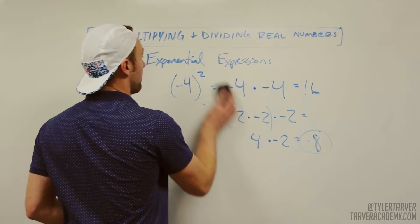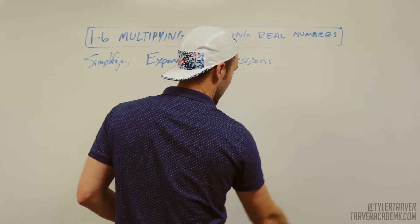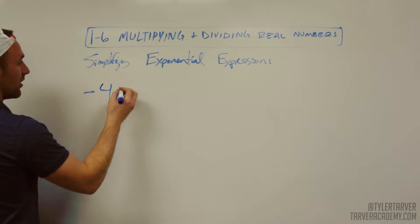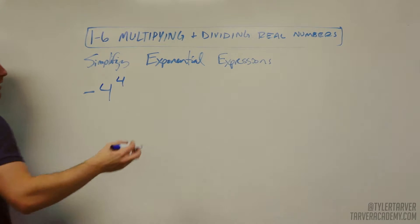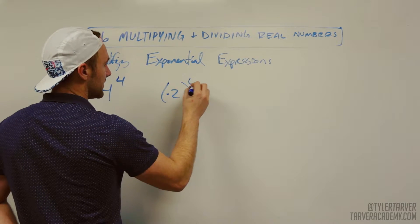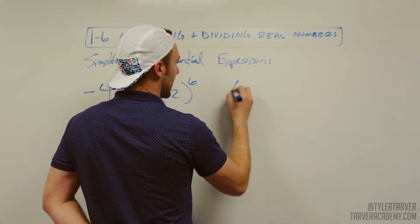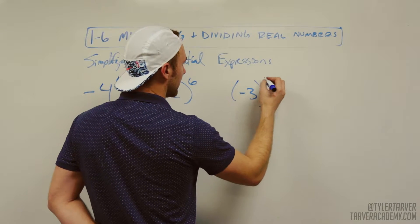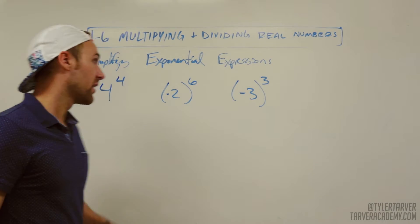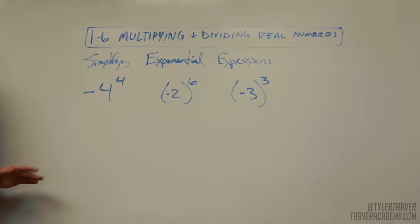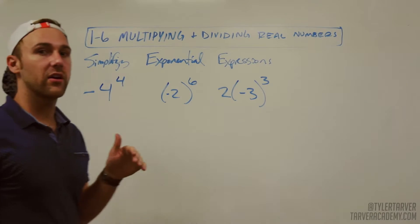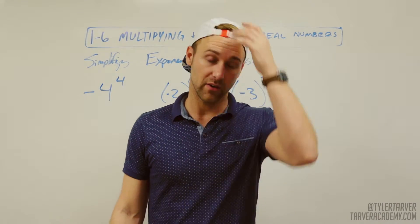Let's look at a couple examples that will probably trip you up. So let's say we got negative four to the fourth, negative two to the sixth, and then let's say negative three to the third. This is where you're going to mess up if you're typing this in a calculator.